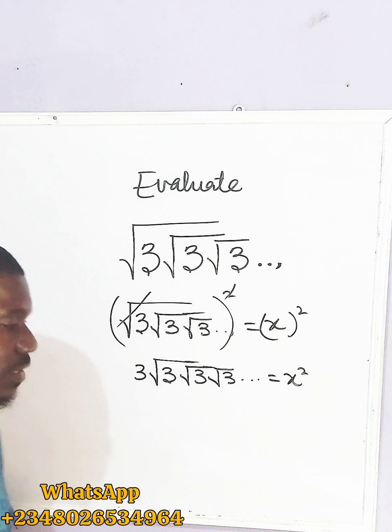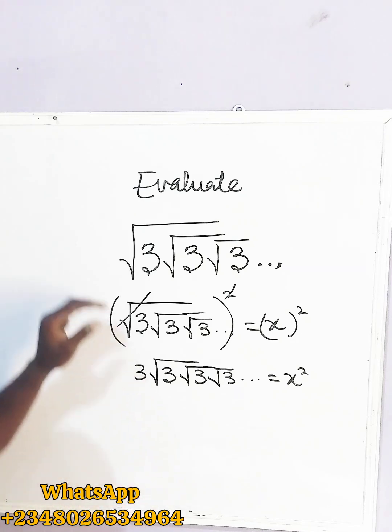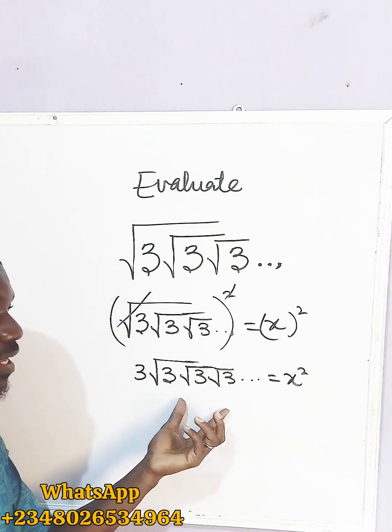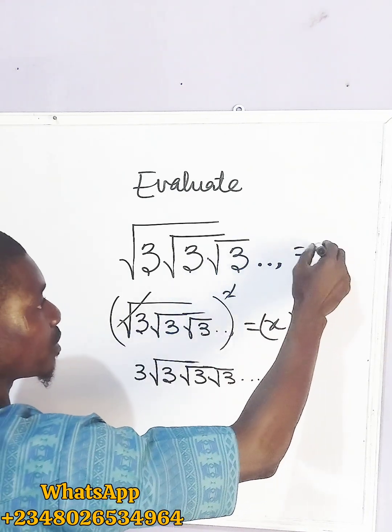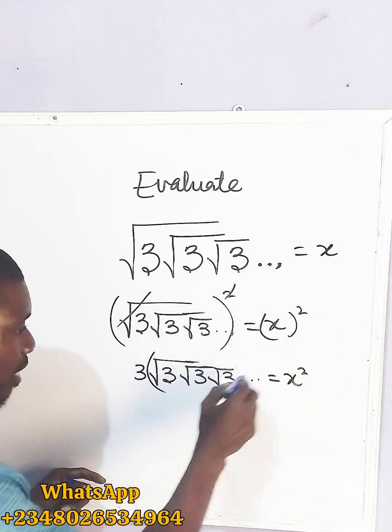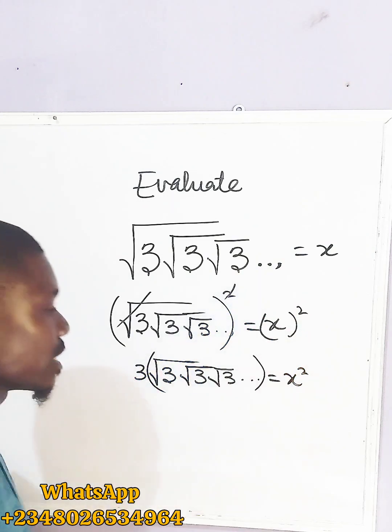Now, if you take a look at the equation now, you get to see that there's a repeat of this here. Okay? Now, initially, we equated this to be what? x. So it means that the whole of these, again, we will make it as x.